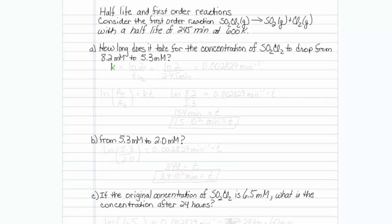The rate constant for a first-order reaction is equal to natural log of 2 divided by the half-life. So that would be natural log of 2 divided by 245 minutes, which turns out to be 0.002829, and it's got units of minutes to the minus 1. That's the first piece.